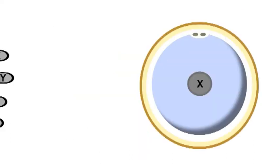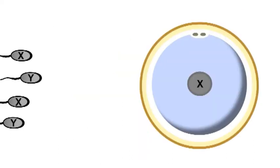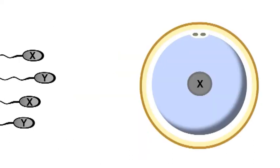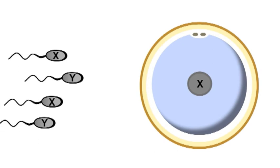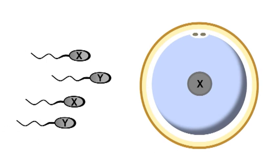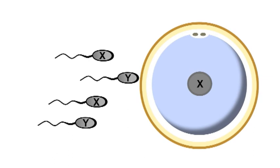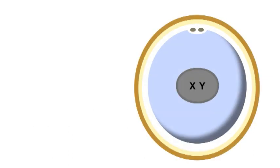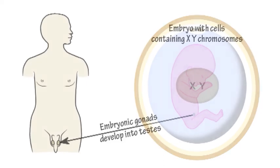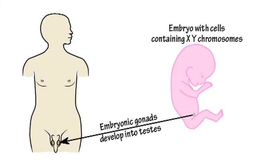Whether that embryo is a male or a female depends on the type of sperm that fertilizes the egg. If the sperm contains a Y chromosome, the sperm and egg fuse to form a zygote that contains an X and a Y chromosome. The Y chromosome then triggers the gonads of the embryo to form testes, resulting in a child that is a boy.